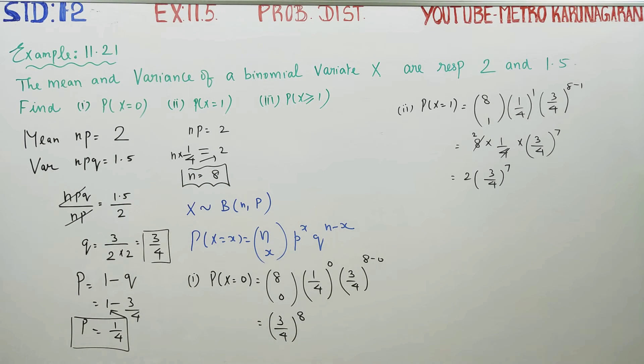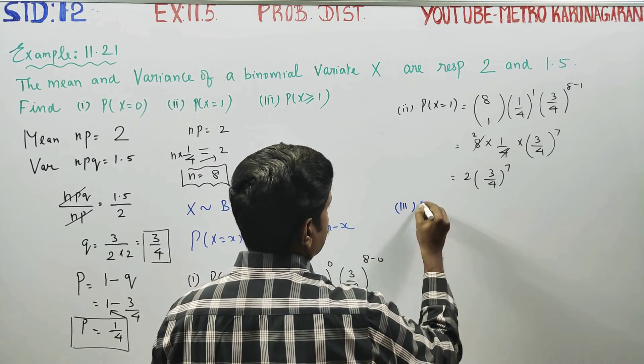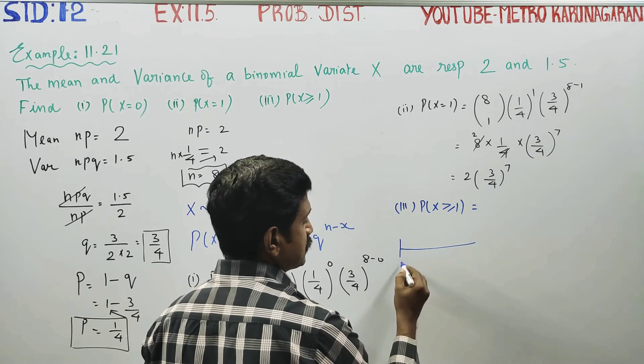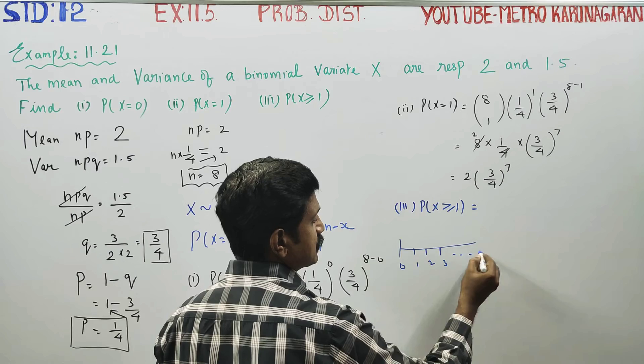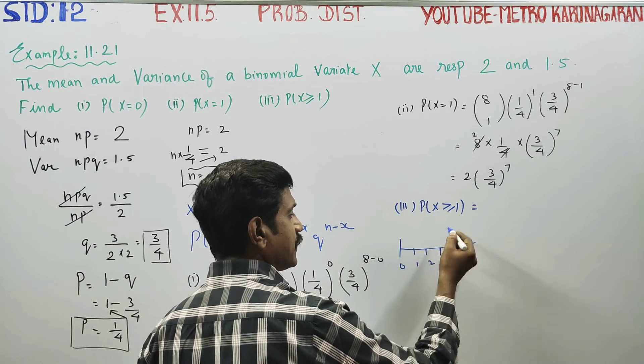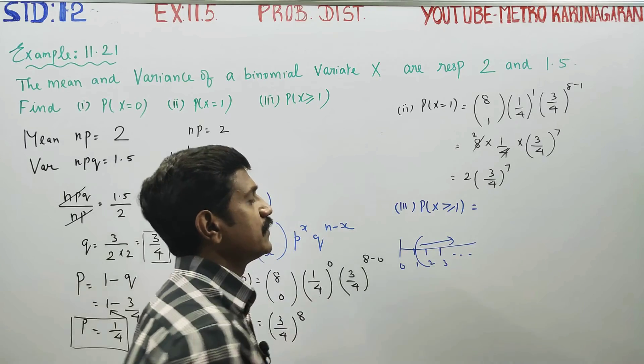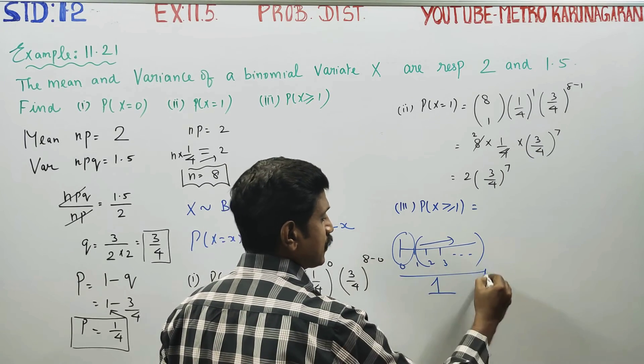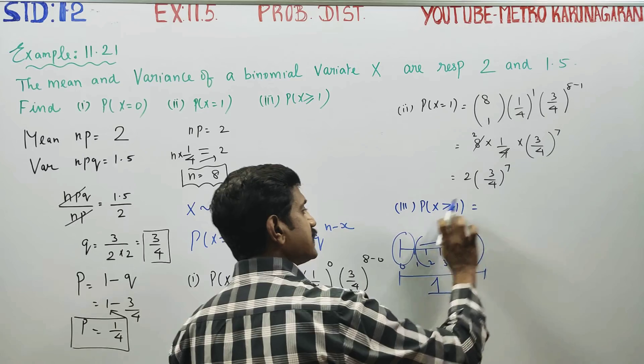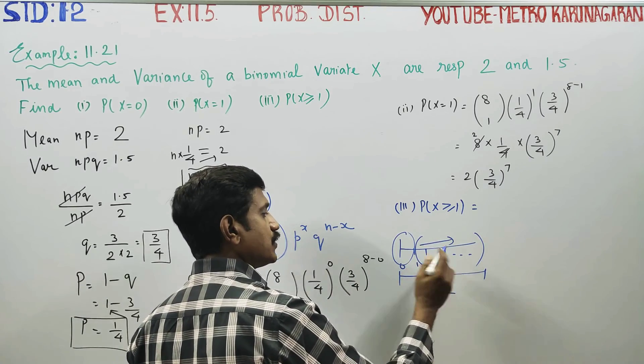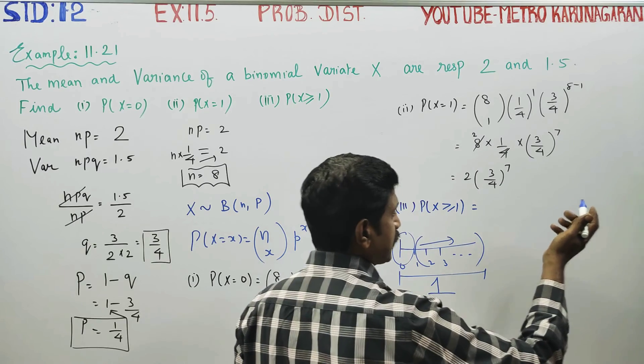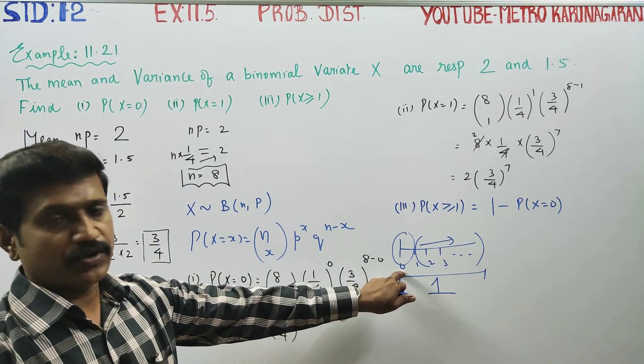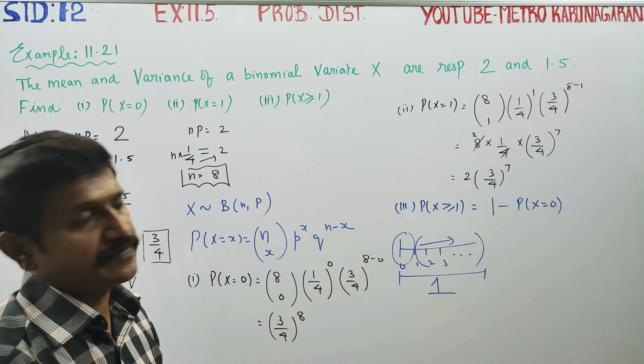After finishing this, third sum is P of x greater than or equal to 1. P of x greater than or equal to 1 means x can be 1, 2, 3, up to 8. Total probability is 1. This is total probability 1. P of X is greater than equal to 1. You will do it. This is 1 minus P of X is equal to 0.